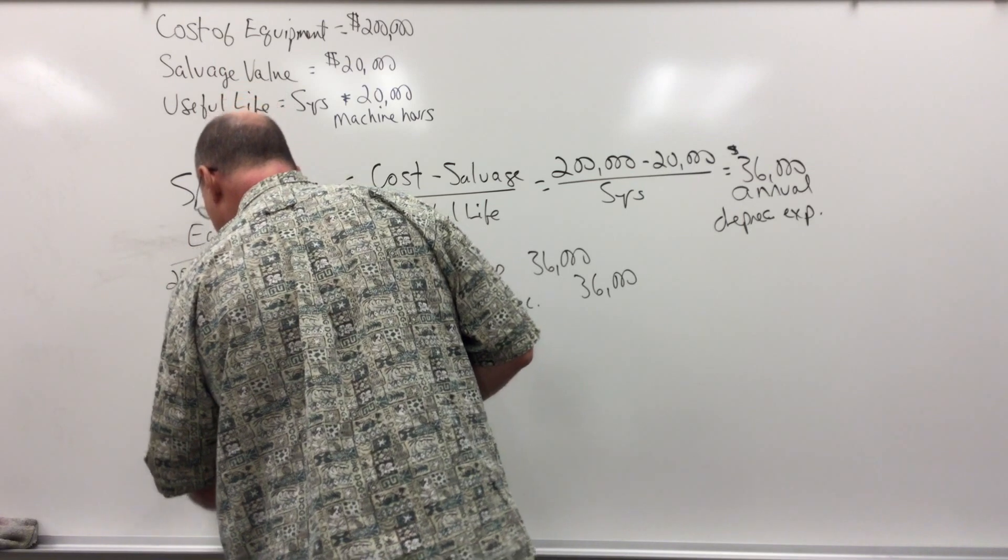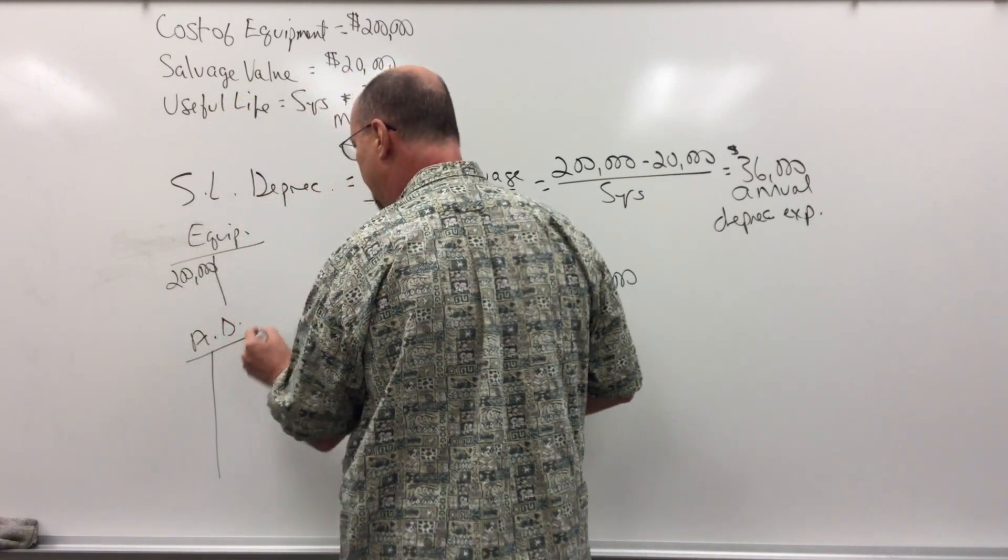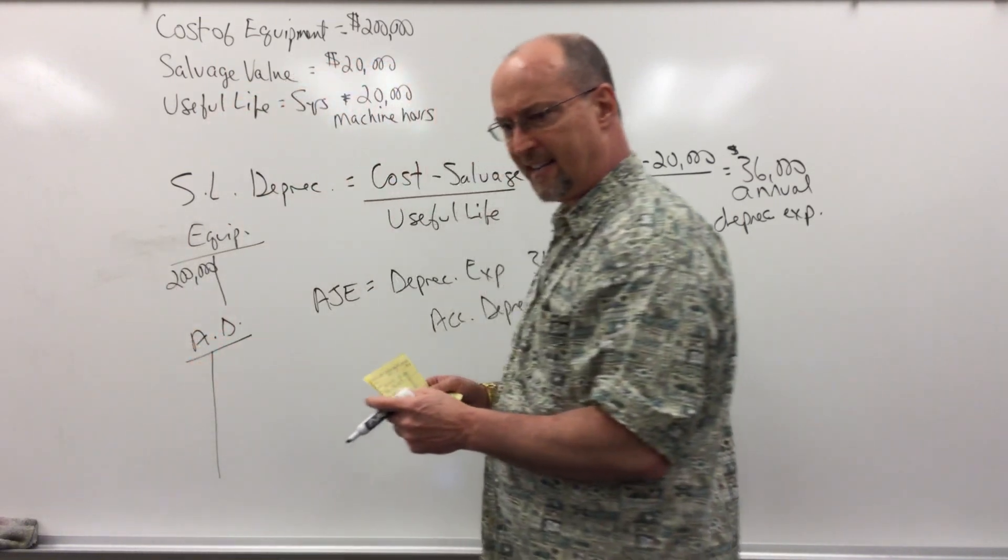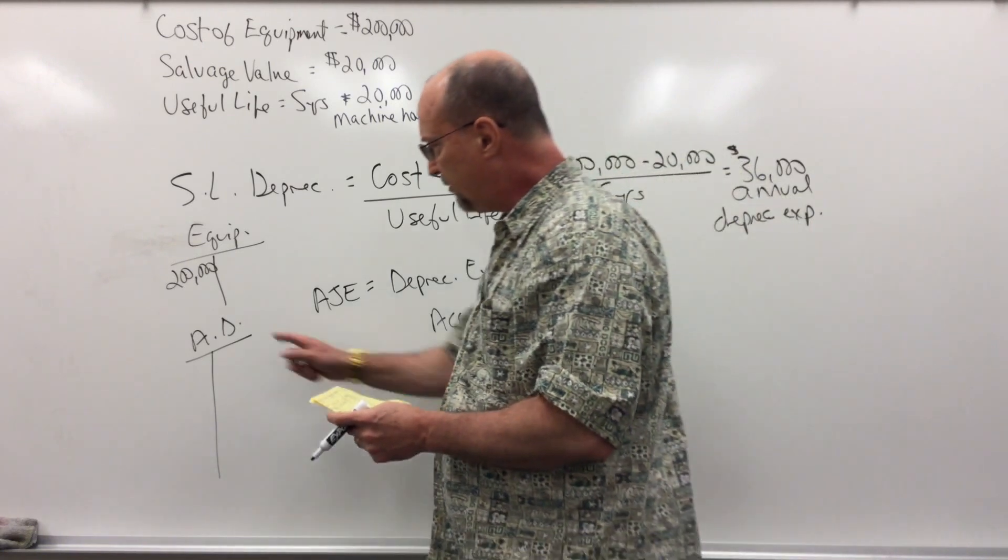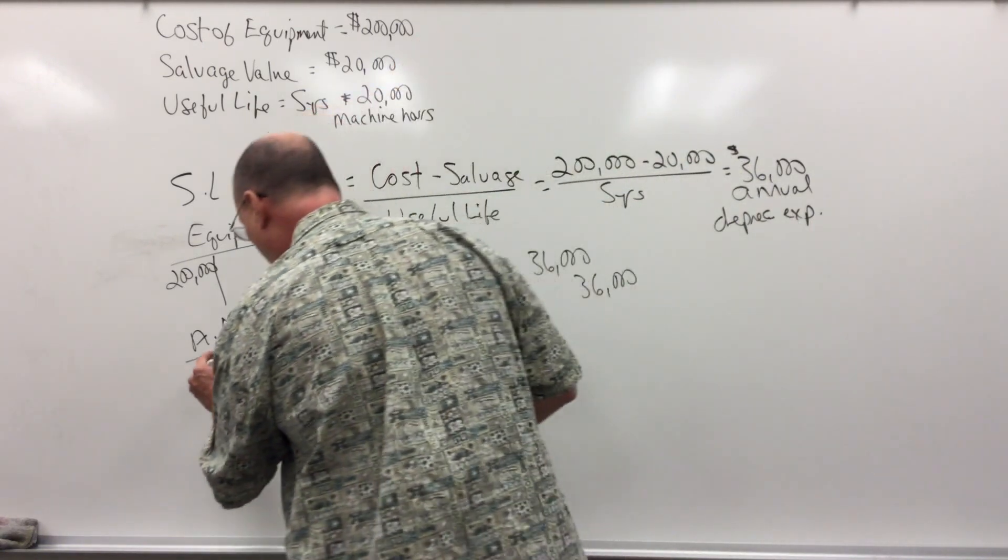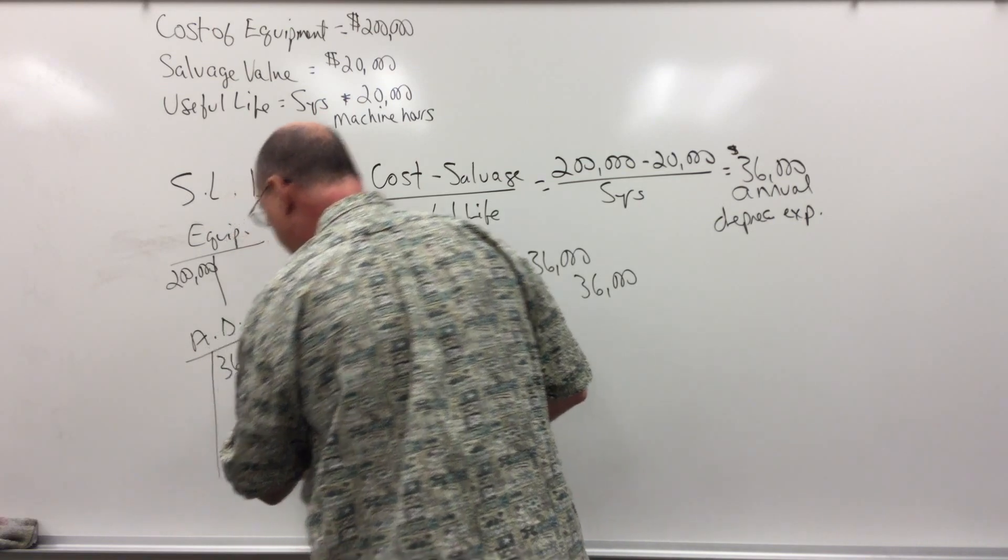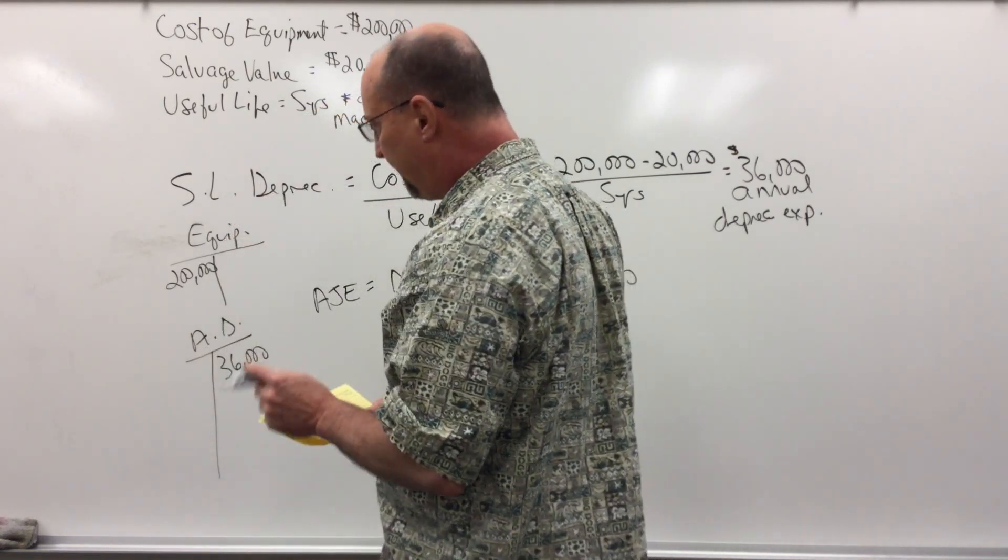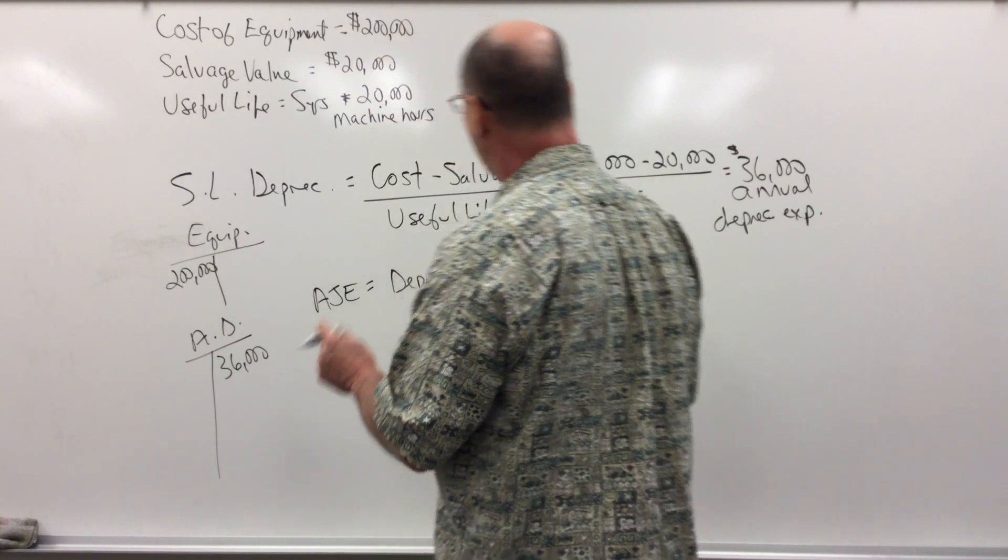However, the accumulated depreciation account - remember, this is a contra-asset account - has a normal credit balance. Every year that we record accumulated depreciation, the book value of the asset goes down.